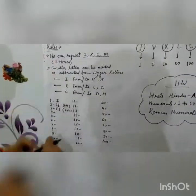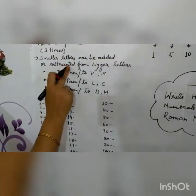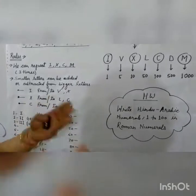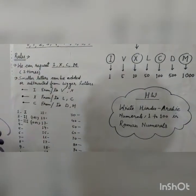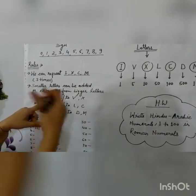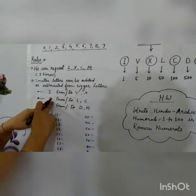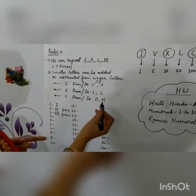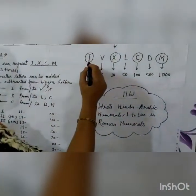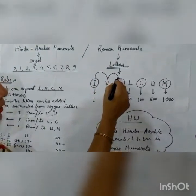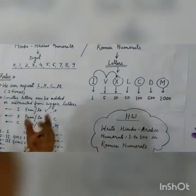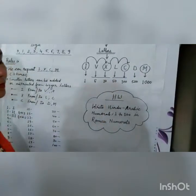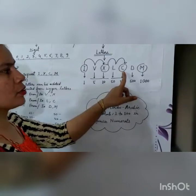The second rule is: smaller letters can be added or subtracted from the bigger letters. But only specific letters apply — I can be subtracted from or added to V and X. X can be subtracted from or added to L and C. C can be subtracted from or added to D and M. If you have to add any letter to a bigger letter, write it on the right side. If you have to subtract, write it on the left side.